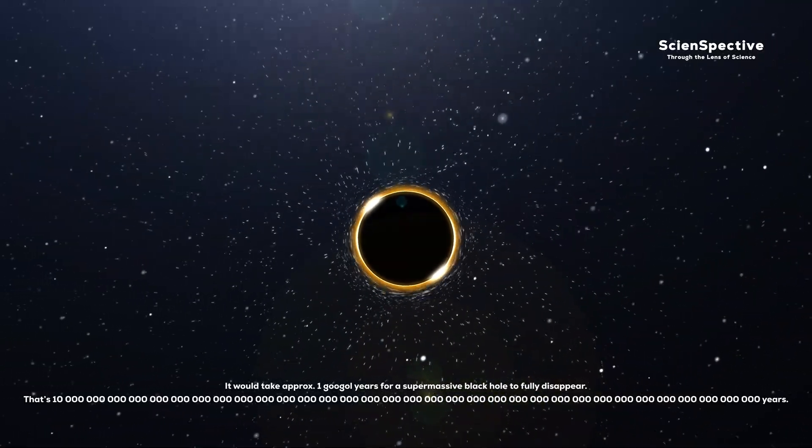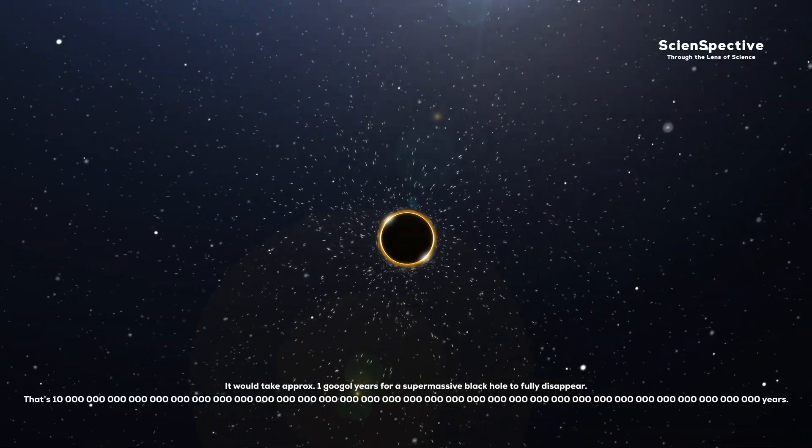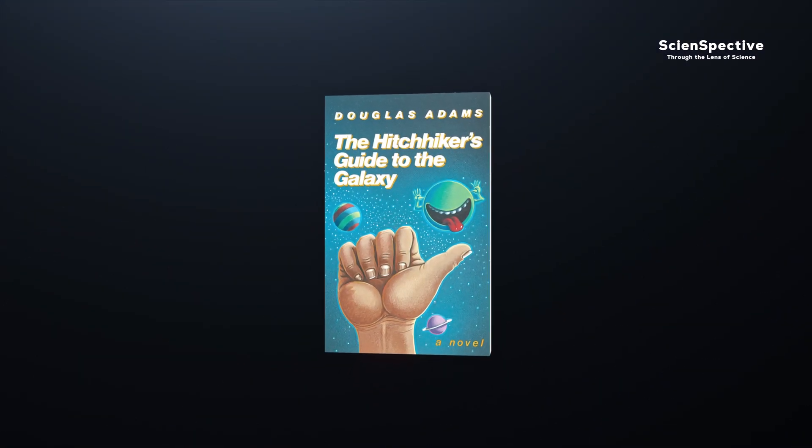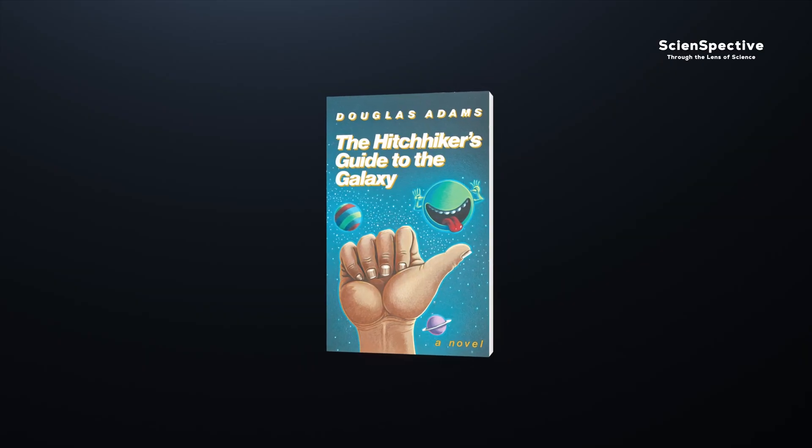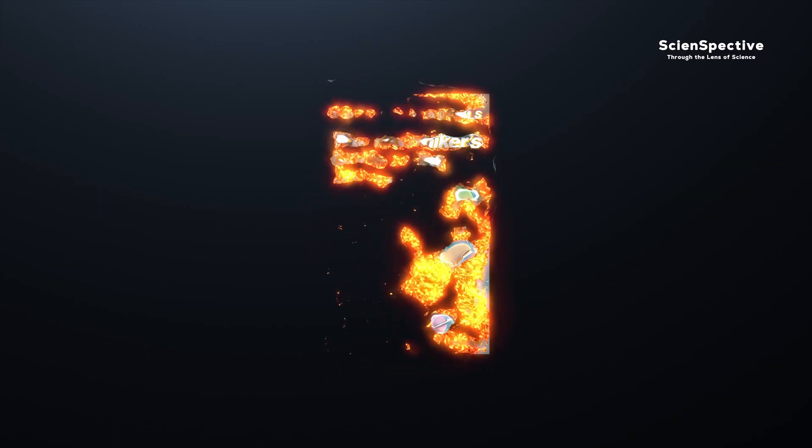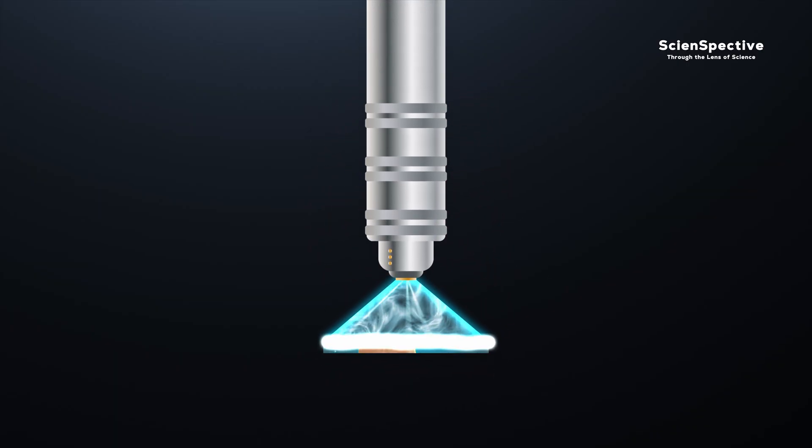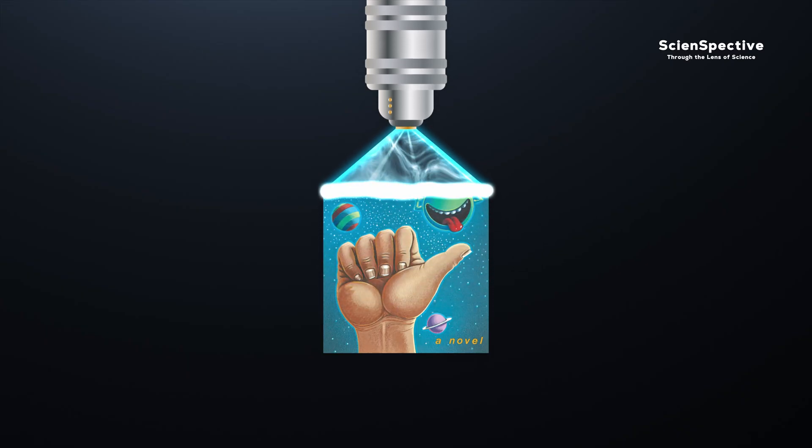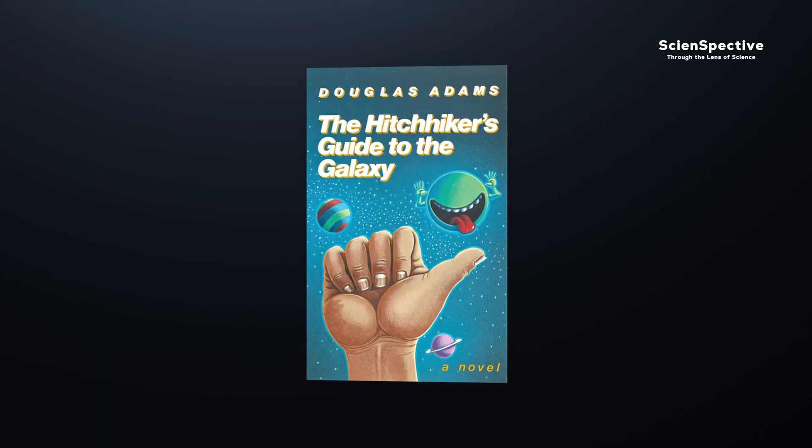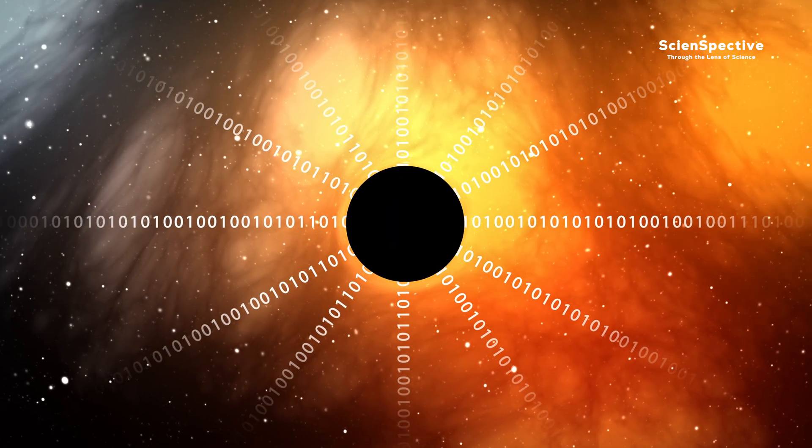But if the black hole ceases to exist, the information it absorbed vanishes too. That would be as if the information had been completely erased from the universe. Yet this contradicts the laws of physics. Imagine that we could somehow track every single particle of a book. We set the book on fire and once the last page is gone, we collect all the molecules and radiation it became, then rebuild it atom by atom. In theory, this works because the book's information wasn't lost, just transformed. But when black holes die, the information they consume seems lost.